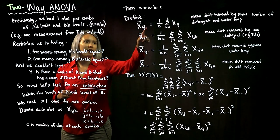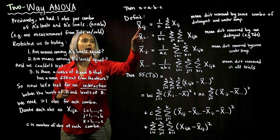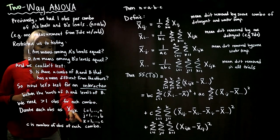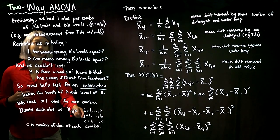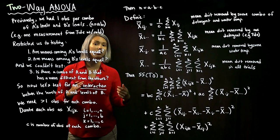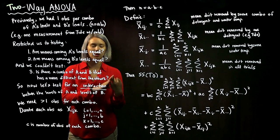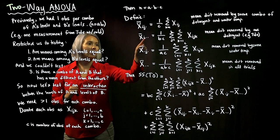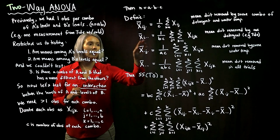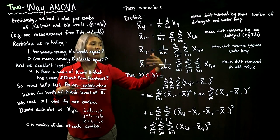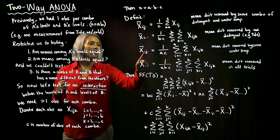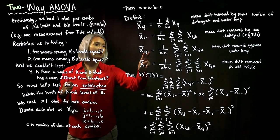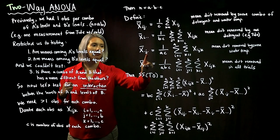When we have a mean with a dot, that means we're averaging over that subscript. So X̄_ij· means we're averaging over the k subscript — that's the mean amount of dirt removed if we use this type of detergent and whatever temperature of water. X̄_i·· means we're averaging over the last two subscripts, so that might be the mean amount of dirt removed by one of the detergents, like Tide.